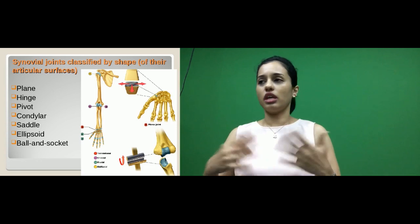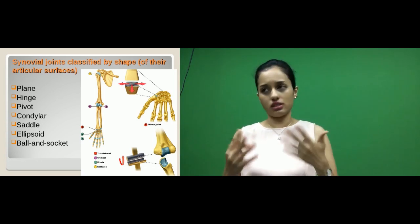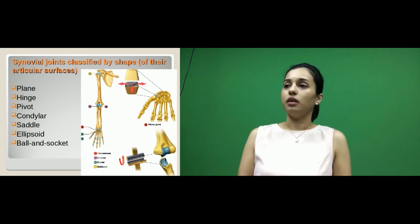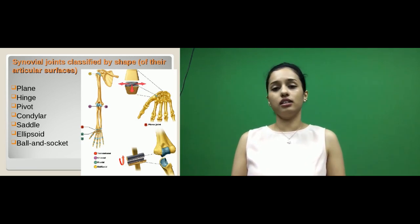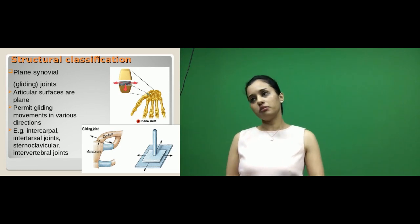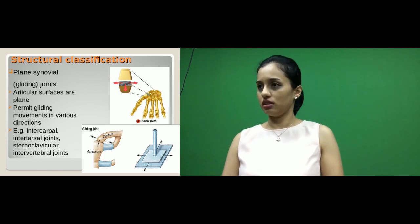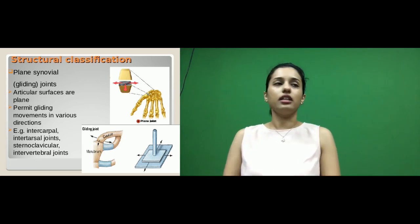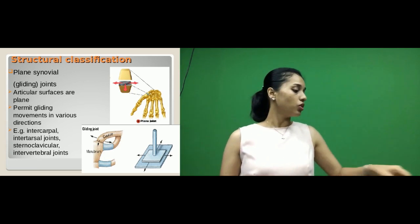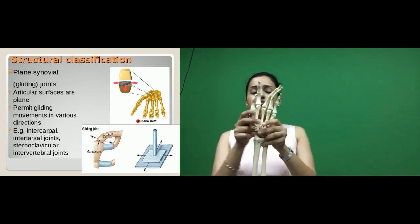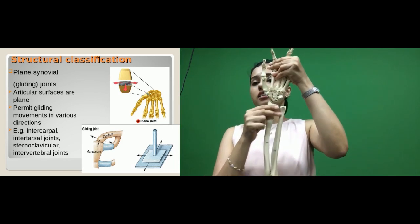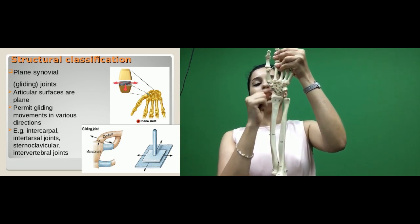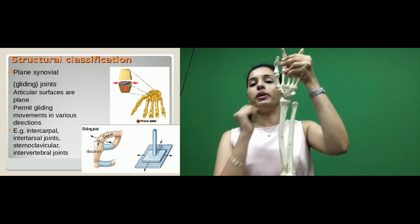Now for the classification of synovial joints: depending upon the structure of the articular surfaces, they are classified into plane, hinge, pivot, condylar, saddle, ellipsoid, and ball and socket. The plane type — the name tells you the bony surfaces are straight, forming gliding joints. The articular surfaces are plain and help in gliding movements in various directions. An example is the carpal bones, where the surfaces between the carpals are plain, forming intercarpal joints.